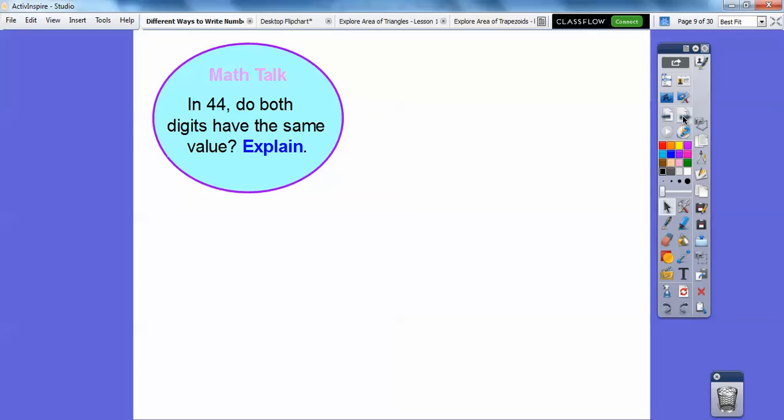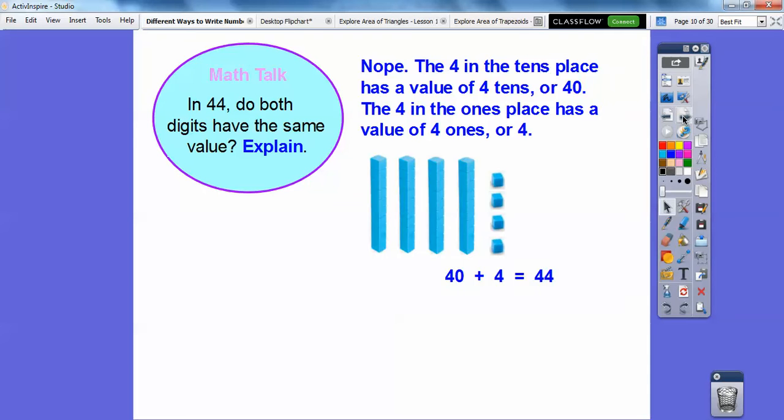So in the number 44, do both digits have the same value and explain? Well, no, they don't because this four right here is in the tens place, so it has a value of four tens, which is 40. And this four right here is in the ones place, so it has a value of four ones, or four. So here's 10, 20, 30, 40.